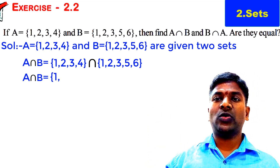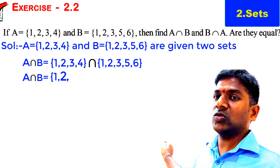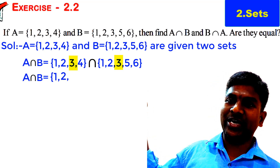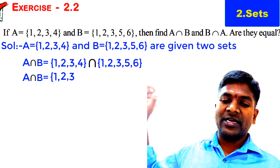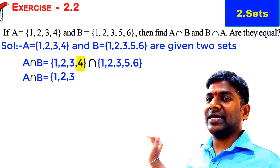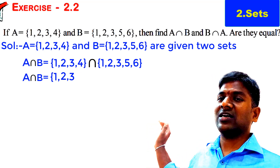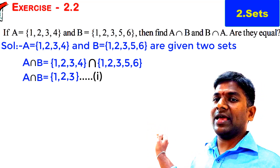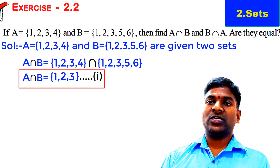2 is also a common element — it is in both sets, so we take 2 in A intersection B. 3 is also a common element in both Set A and Set B, so we take 3 as well. 4 is not a common element — it is only in Set A, not in Set B. Therefore, A intersection B = {1, 2, 3}.